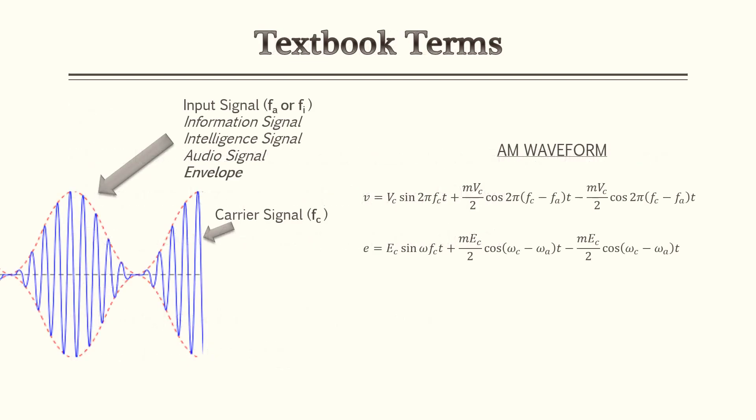One last important topic: textbook terminology. Different communications books and PE references don't always use the same terms. For example, your input signal may also be called the information signal, intelligence signal, audio signal, or most importantly, the envelope — all meaning the same thing. The subscript may also vary: frequency audio (FA) or frequency information (FI). Your carrier signal, however, is consistently called the carrier signal with subscript FC across books.